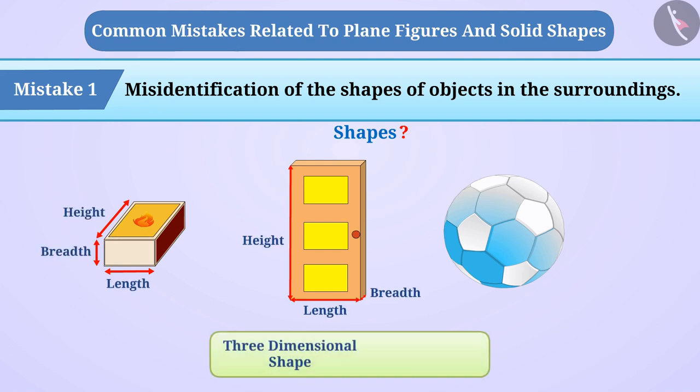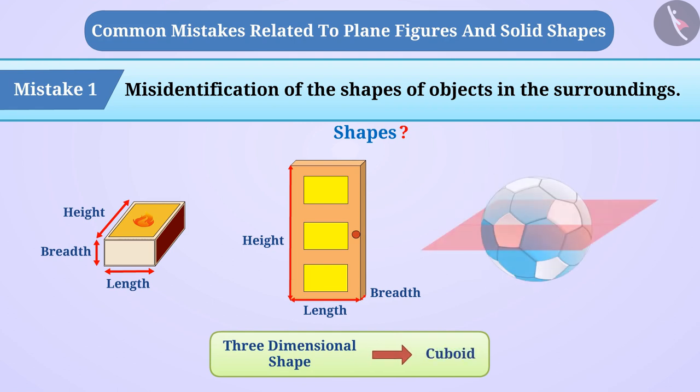If we talk about the ball, then we see that it is not situated in one plane. Therefore, it is also a three-dimensional shape which is called a sphere.